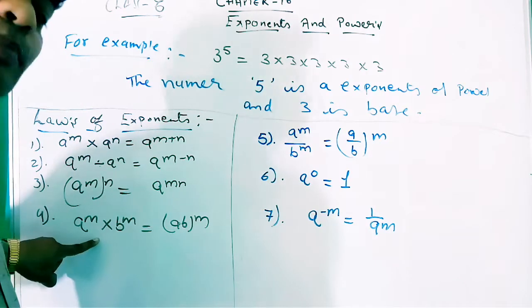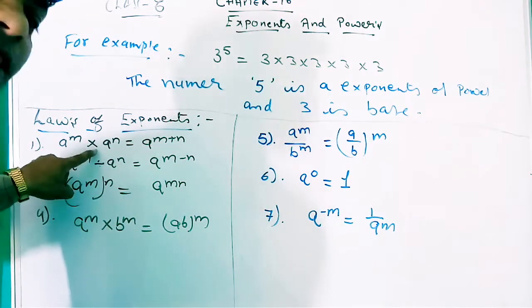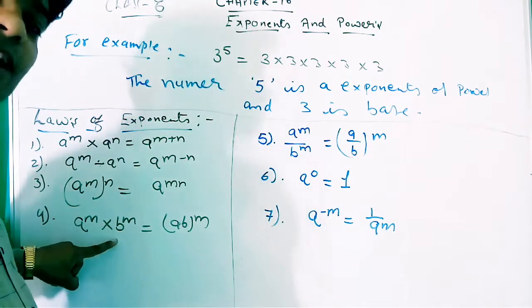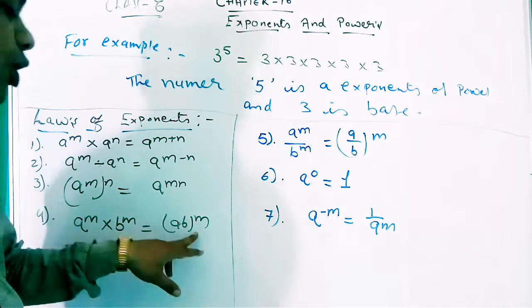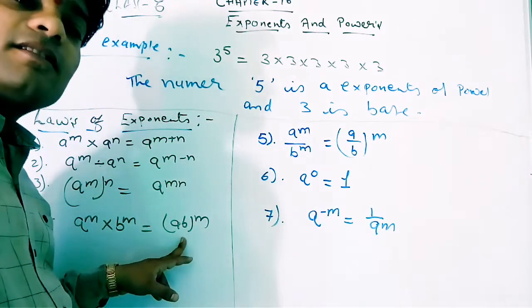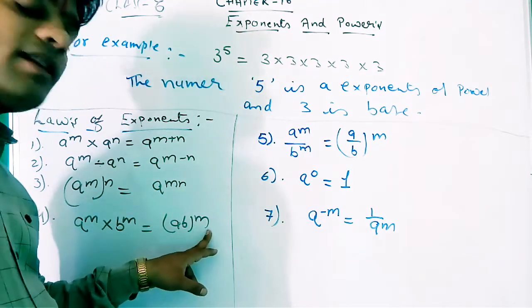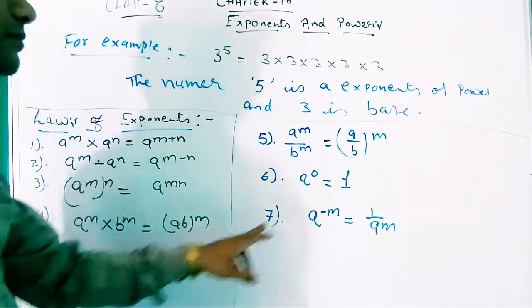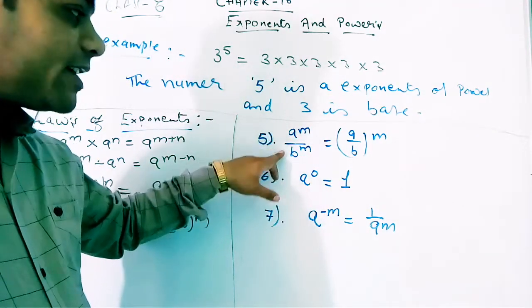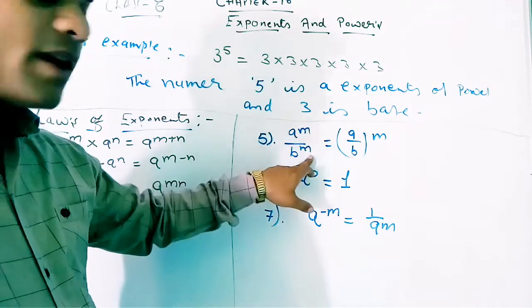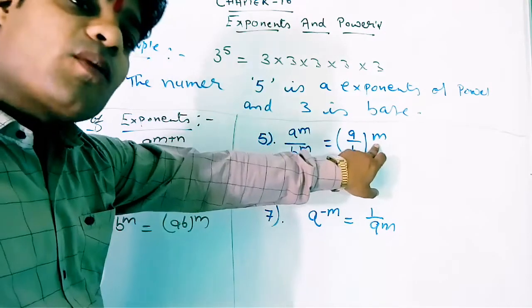Fourth law: when the base is different but powers are the same, we take the power as common and the bases are multiplied. For example, a into b all raised to m becomes common. Fifth law: when bases are different and divided — a divided by b — the power m becomes common, so it is (a divided by b) raised to m.